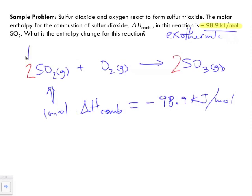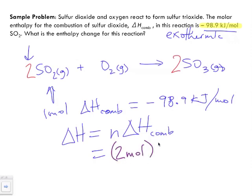So what do we have? Well, the enthalpy change—because the question says what is the enthalpy change—is equal to n multiplied by our change in enthalpy of combustion. How many moles do we have of sulfur dioxide? Well, we have two moles of sulfur dioxide multiplied by -98.9 kilojoules per mole. Notice here moles are going to divide out.